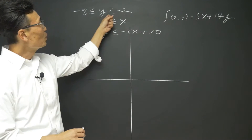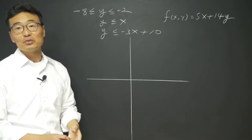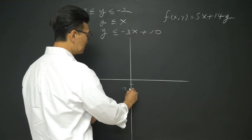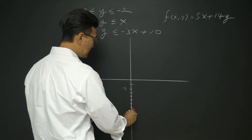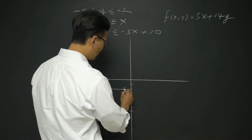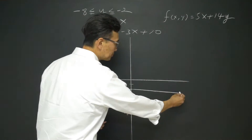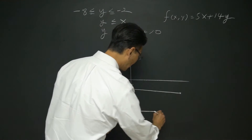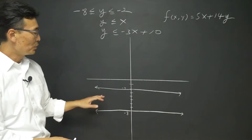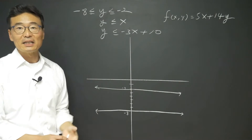Let's begin. First, we're going to graph y greater than or equal to negative 8 and less than or equal to negative 2. So if we start with negative 2 and count down to negative 8, I'm going to graph y equals negative 2 and also y equals negative 8. It's going to be shaded between greater than negative 8 and less than negative 2.